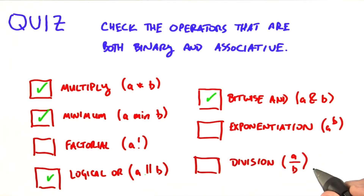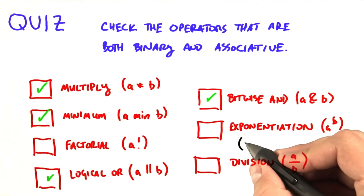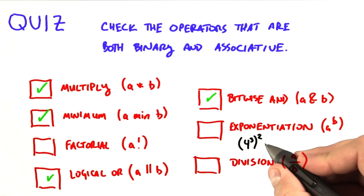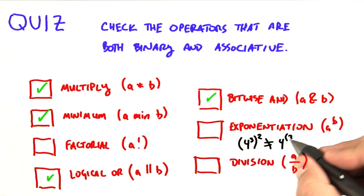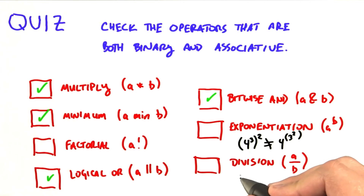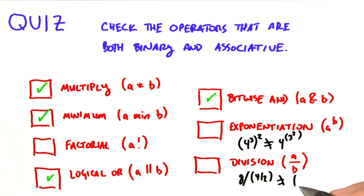Both exponentiation and division are not associative. To prove that to yourself, note that 4 to the third, squared, is not equal to 4 to the quantity 3 squared; or that 8 divided by 4 divided by 2 is not equal to 8 divided by the quantity 4 divided by 2.